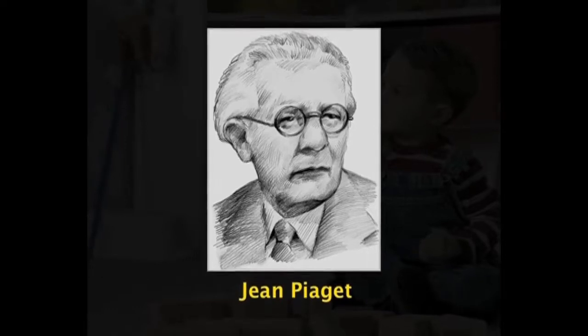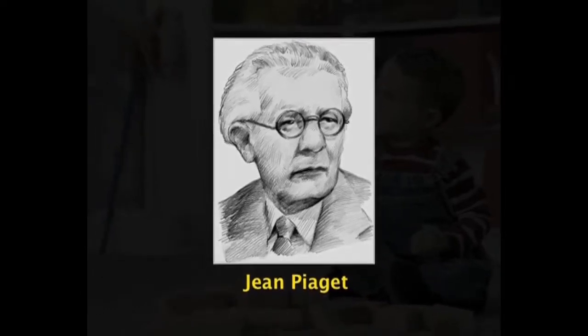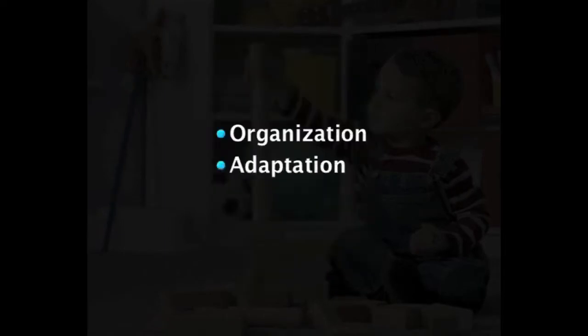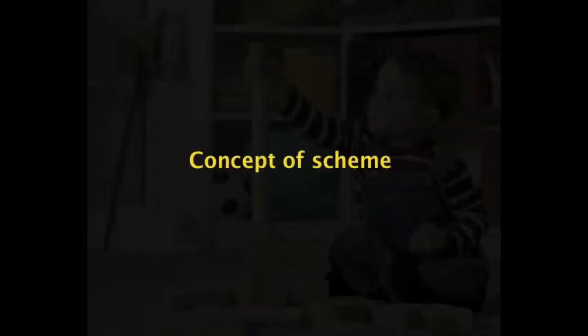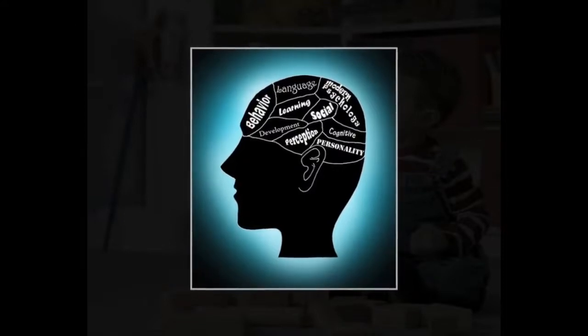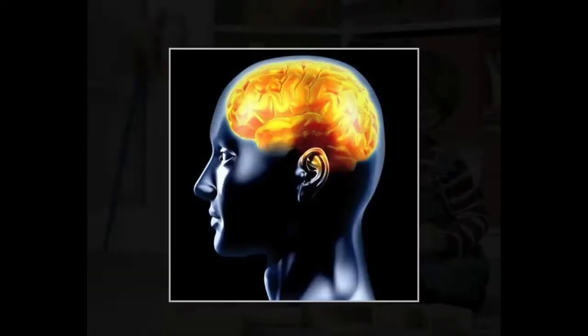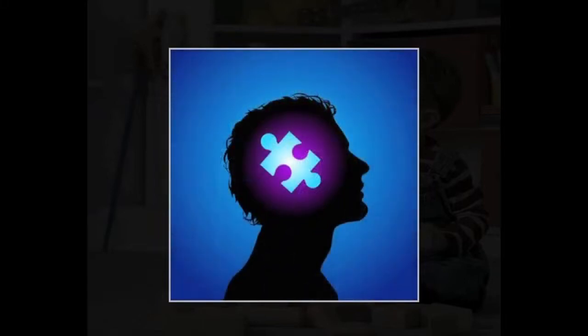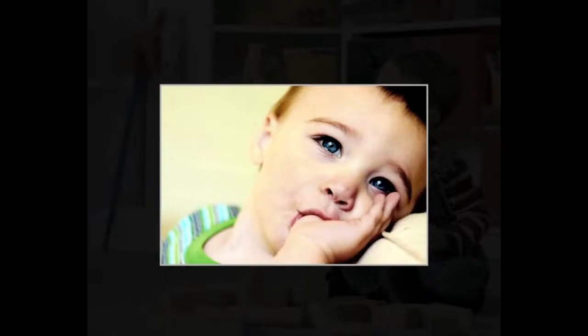After having understood what cognitive development is and how it occurs, let us now look at the cognitive process. Piaget described cognitive growth as occurring through three interrelated processes: organization, adaptation, and equilibration. Before explaining the processes, let us first look at the concept of scheme. Schemes are cognitive guides or blueprints for processing information about the world. They are reliable responses to environmental stimuli — mental patterns or systems that describe the way people think about the world, which are the building blocks of thinking. At each successive stage of cognitive development, these individual schemes incorporate previous levels and become more sophisticated and complex.